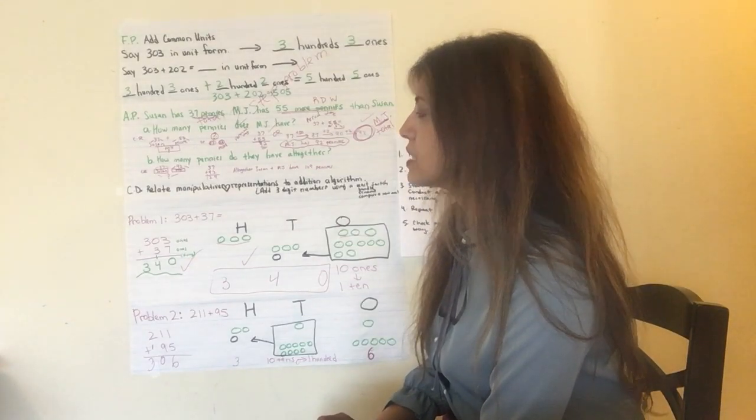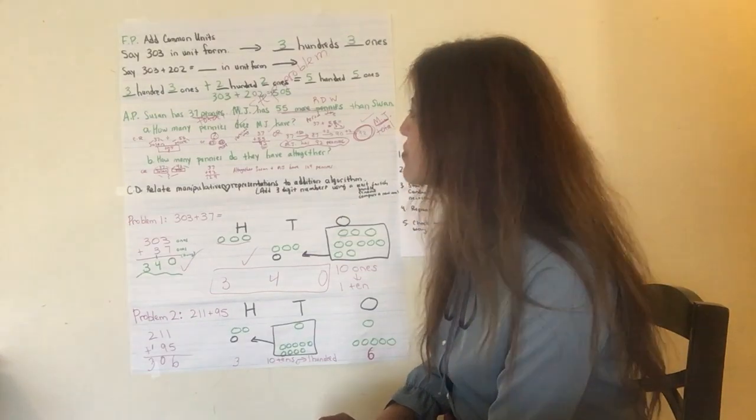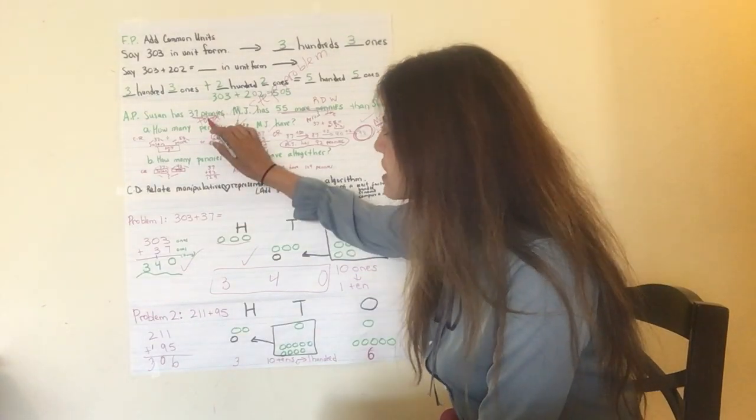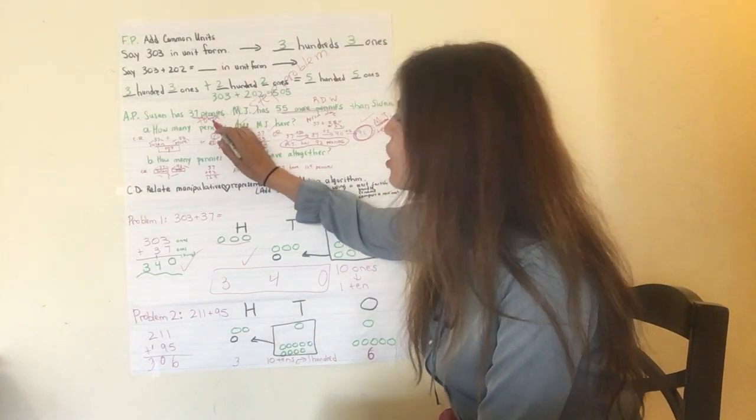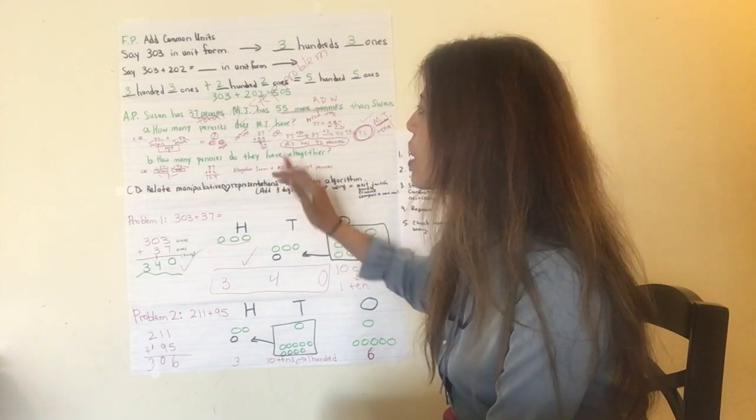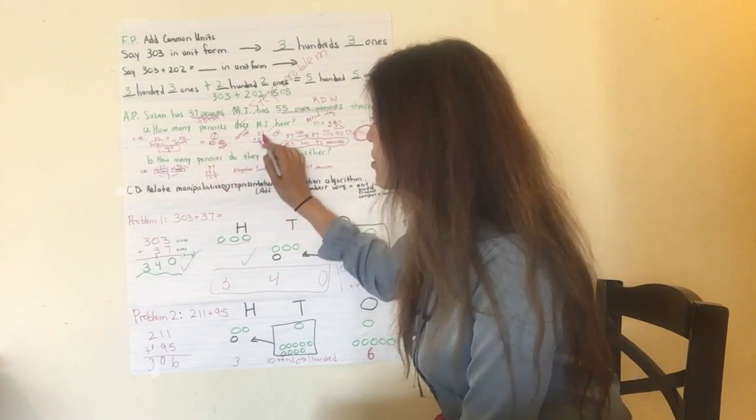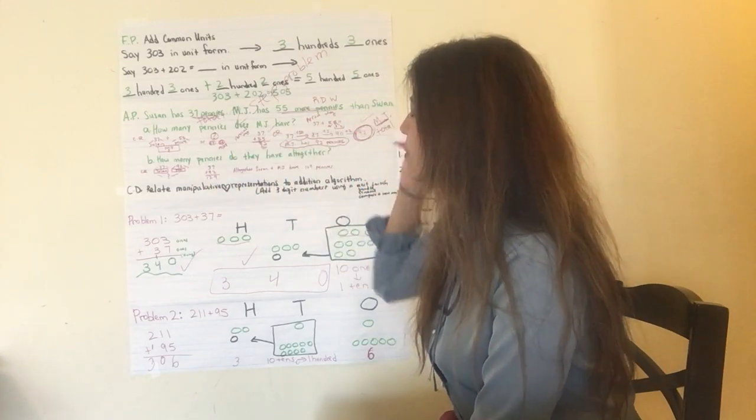Now, do you agree with me? Do we have to add? Yes, absolutely. We have to add. Because there is 37. 37 is Susan's total. We need to figure out what is MJ's total. We don't know that information. But we do know that she has 55 more. So that's why we're adding the 37 plus the 55.